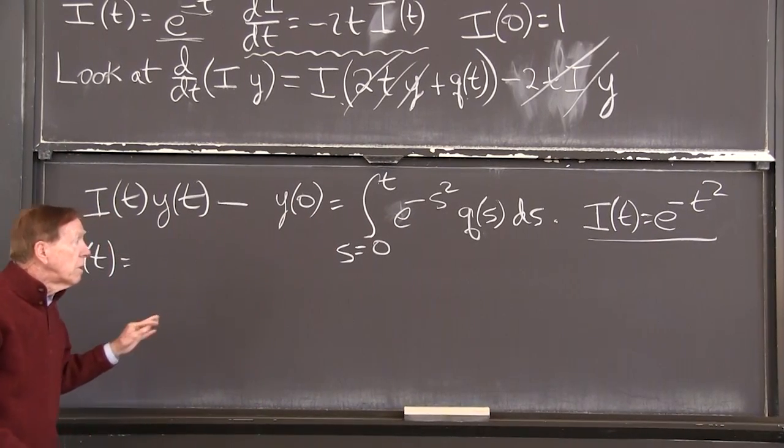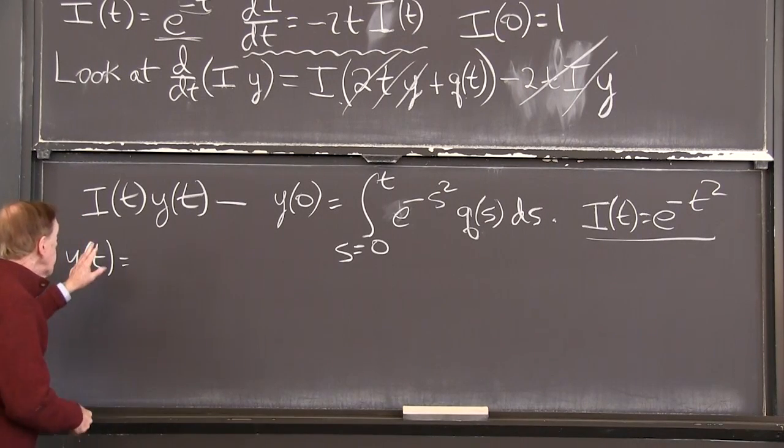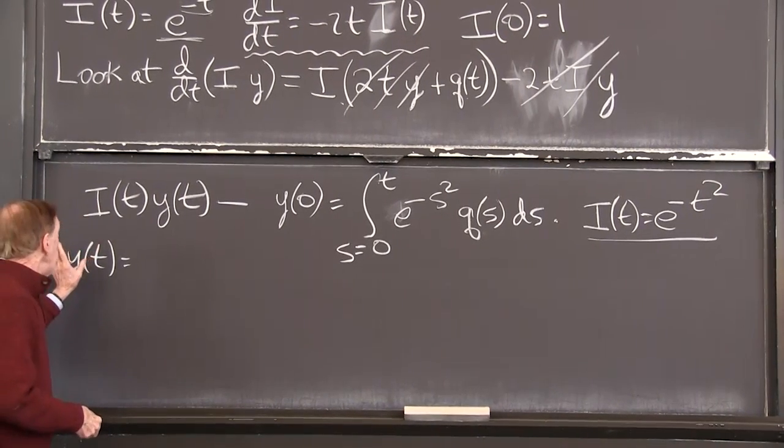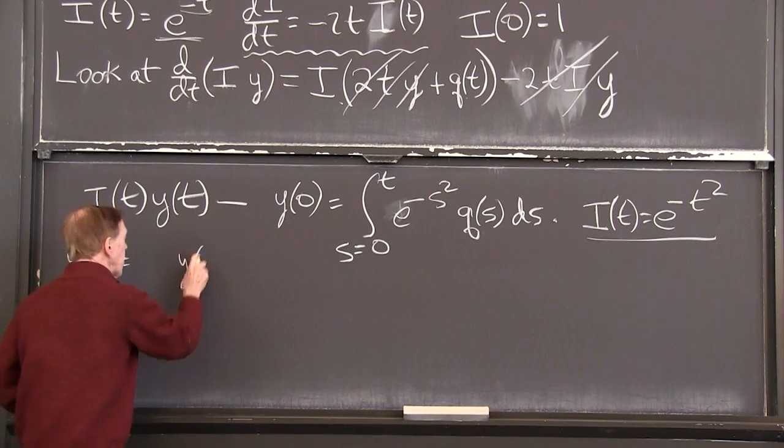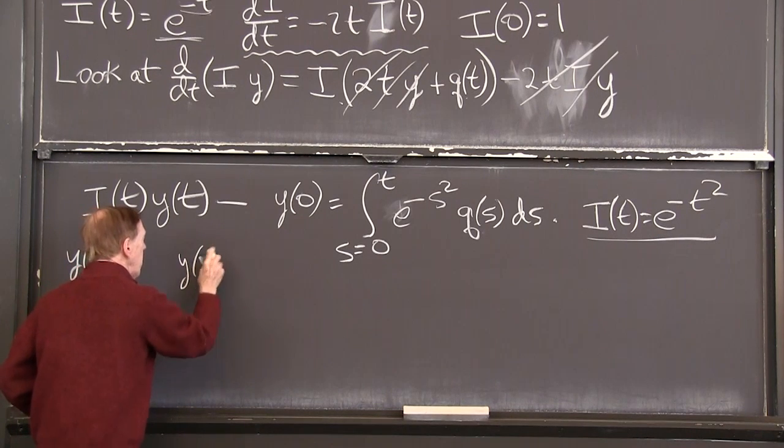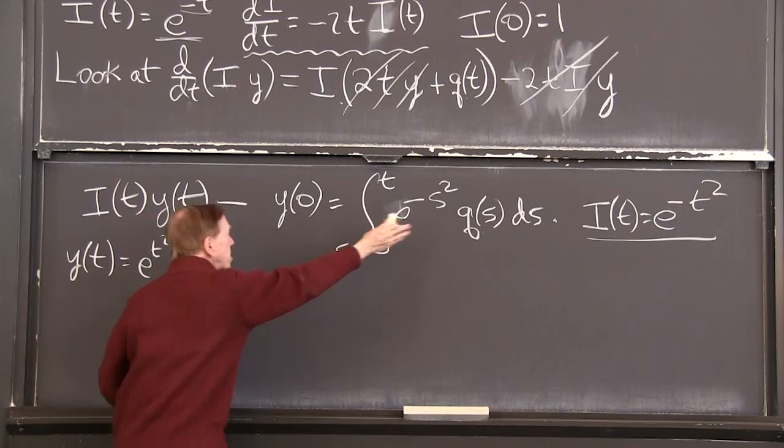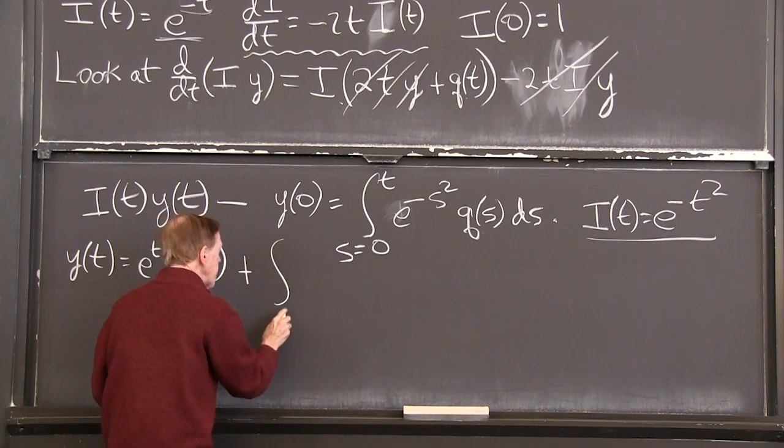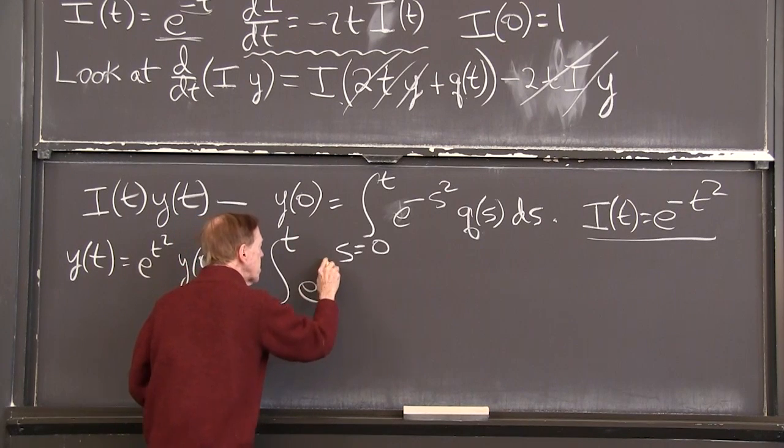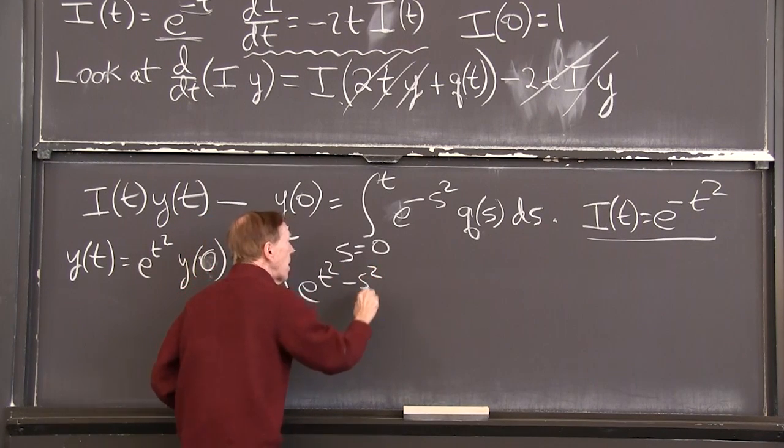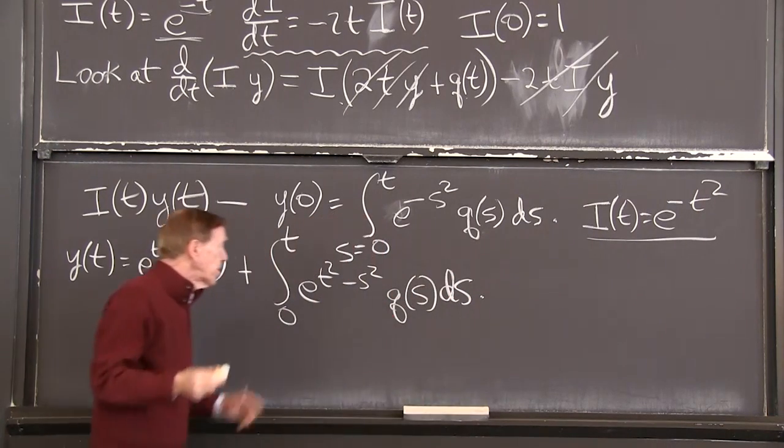So I'm going to divide by that, which means I'll multiply by e to the t squared. So that will knock out the i here. I'll put this on the other side of the equation, y of 0. Y of 0. And it will be multiplied by the e to the t squared. And this thing will be multiplied by e to the t squared. The integral from 0 to t of e to the t squared minus s squared q of s ds. That's my answer.